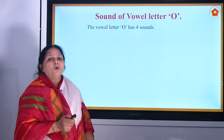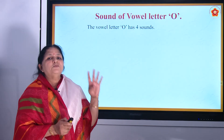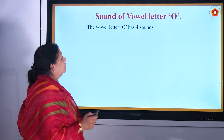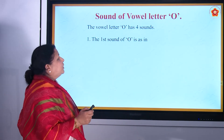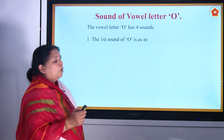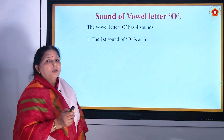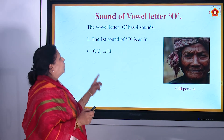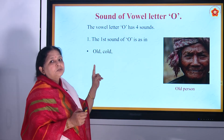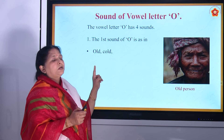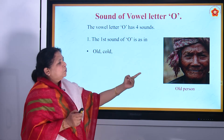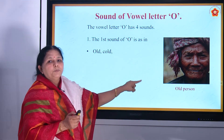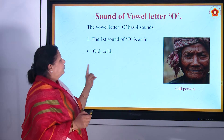The vowel letter O has four sounds. The first sound of O is as in 'old' — O, L, D — old. What do you mean by old? Old person — old.